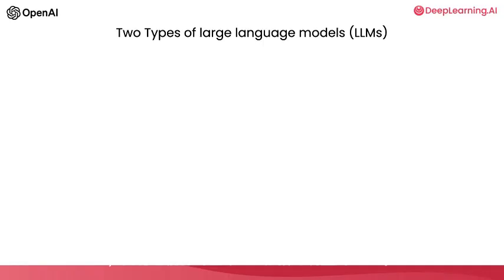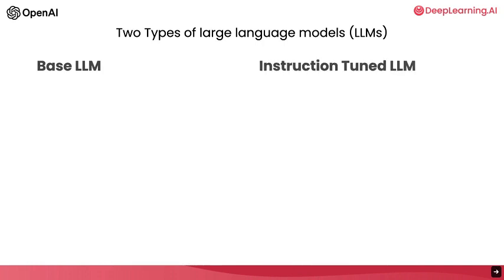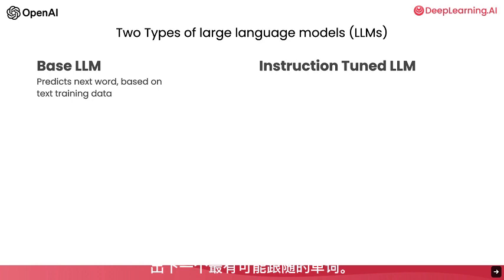In the development of large language models, or LLMs, there have been broadly two types of LLMs, which I'm going to refer to as base LLMs and instruction-tuned LLMs. A base LLM has been trained to predict the next word based on text training data, often trained on a large amount of data from the internet and other sources to figure out what's the next most likely word to follow.